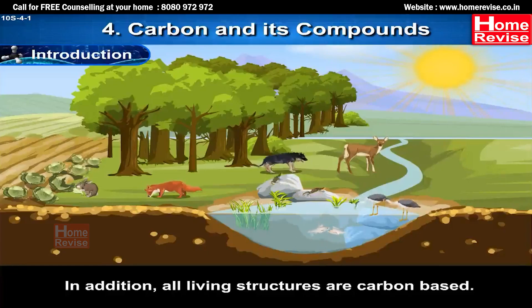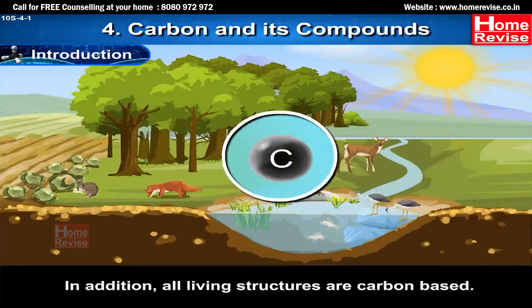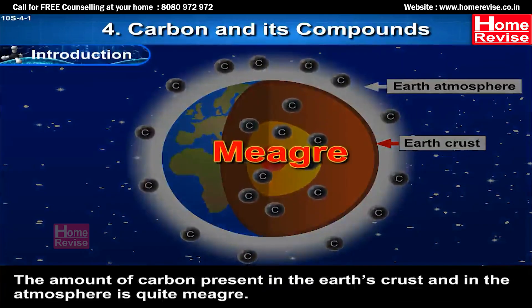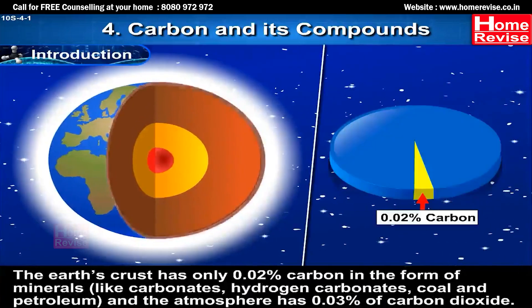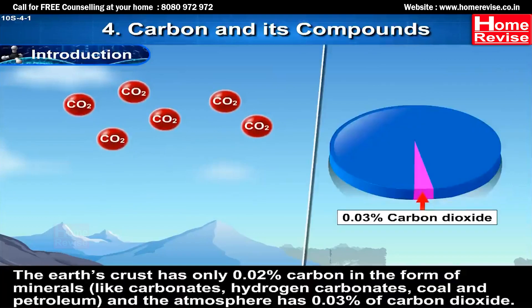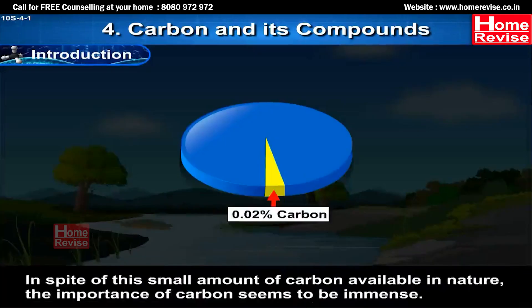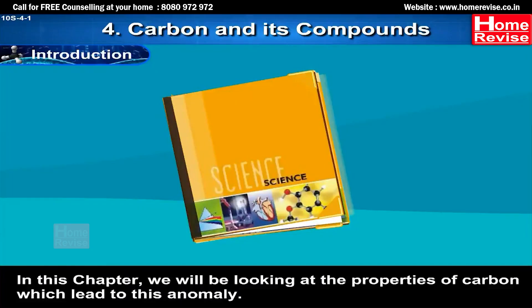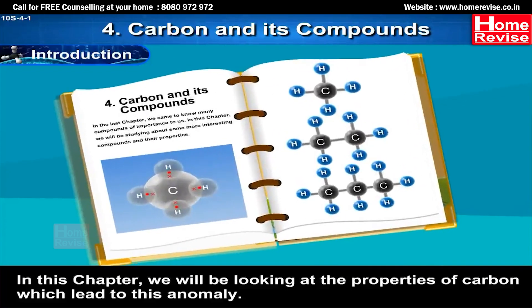In addition, all living structures are carbon-based. The amount of carbon present in the Earth's crust and in the atmosphere is quite meagre. The Earth's crust has only 0.02% carbon in the form of minerals like carbonates, hydrogen carbonates, coal and petroleum. The atmosphere has 0.03% of carbon dioxide. In spite of the small amount of carbon available in nature, the importance of carbon seems to be immense. In this chapter, we will be looking at the properties of carbon which lead to this anomaly.